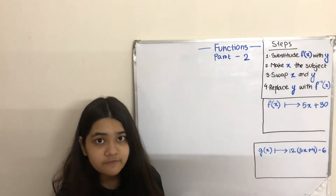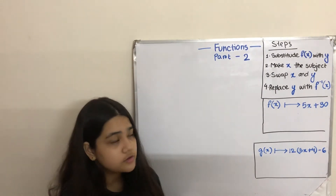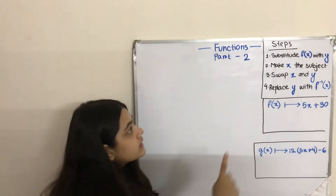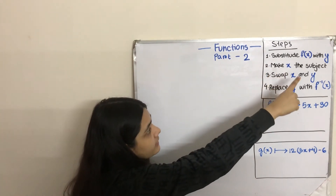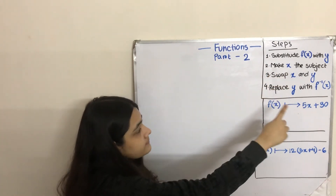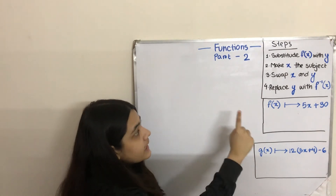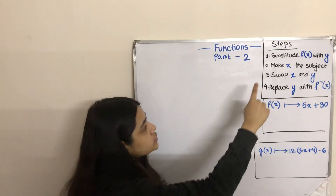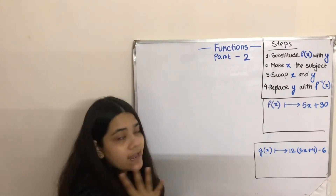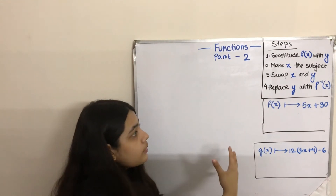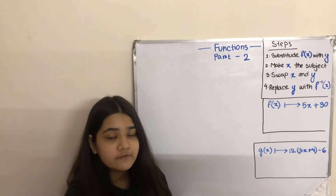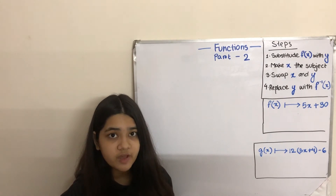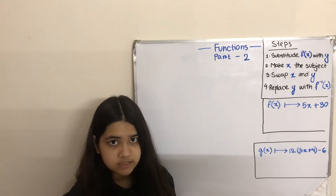To find the inverse of a function, we follow these 4 simple steps. Number 1: substitute f of x with y. Number 2: make x the subject of the equation. Number 3: swap x and y. And number 4: replace y with f inverse x. So now, let's turn some functions into inverse functions.